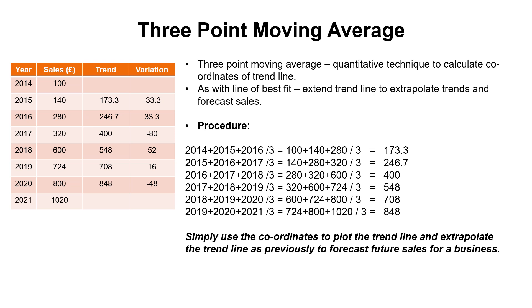Now the curveball thrown in by section 4.3 is that instead of drawing a line of best fit, they may expect you to use the three-point moving average technique. All this actually does — using the data but expressed as actual sales rather than mean sales — is calculate the coordinates for the trend line, so you can plot the trend line rather than drawing a line of best fit. The three-point moving average means you are physically calculating the trend, and the 'three points' is because you're averaging over a three-year period.